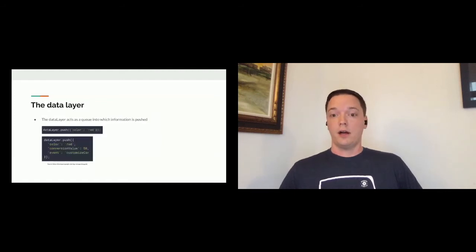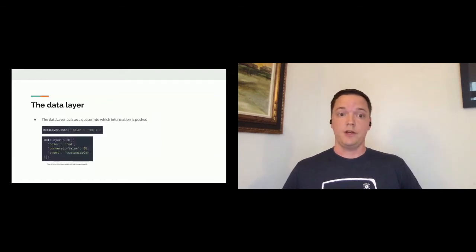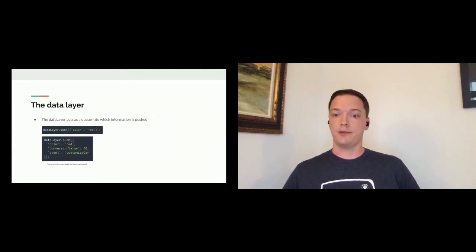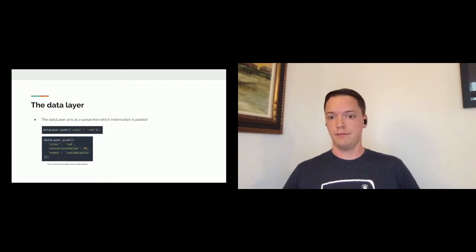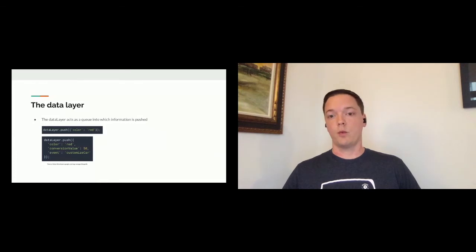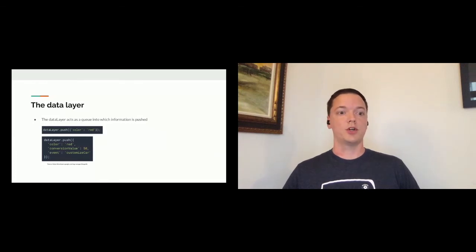The data layer basically acts as a queue into which information is pushed. In JavaScript, you call dataLayer.push and push the color red into the data layer, for example. Or you can push more than one thing at once — a color, a conversion value, and an event all at the same time.